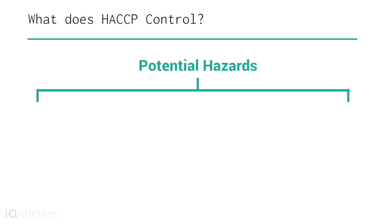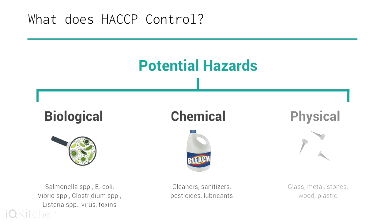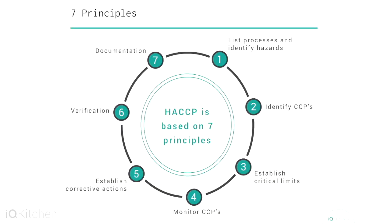A HACCP system requires that potential hazards are identified and controlled at specific points in the process. This includes biological, chemical, or physical hazards. Any company can use HACCP to minimize or eliminate food safety hazards in their product. HACCP is based on seven principles.